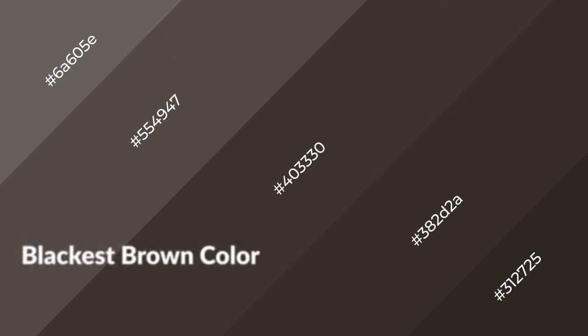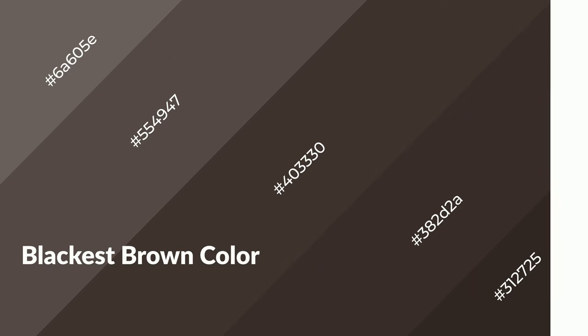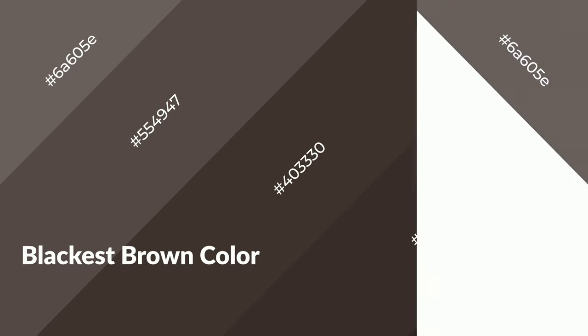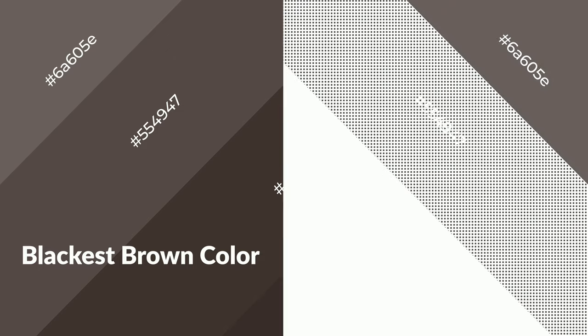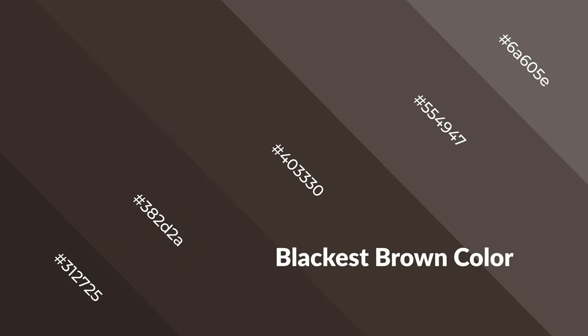Blackest brown is a warm color and it emits cozier and active emotions. Warm colors are symbols of warmth, fire, heat, and sunshine. It also evokes joy, passion, love, and even anger emotions. You can see them used in restaurants and gyms.